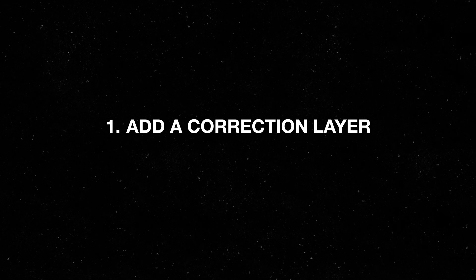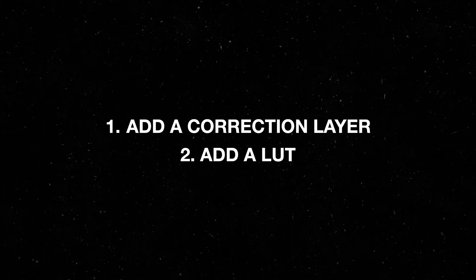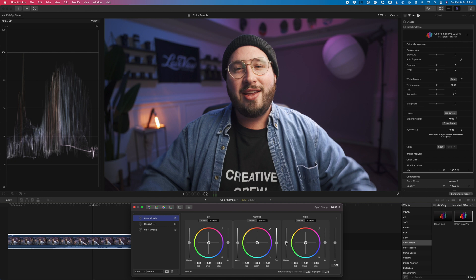Let's recap what we've done so far: we added a correction layer and got our footage looking more natural, then we added in our LUT which gave it a little more style. In this last step, we're going to fine-tune things and really see what we want to push for this particular shot. I'll add in an additional color wheel — sometimes when you add a LUT your scopes will adjust, so I want to readjust. I'll drag my highlights and shadows back to the lines because I actually want a little bit more of a contrasty look. After looking at this, I think I want a little extra punch of that blue and pink from my background lights.